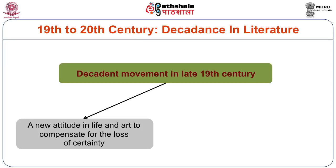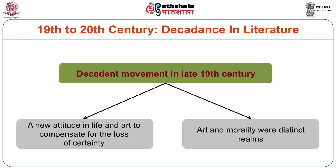Decadence is a new attitude in life and art to compensate for the loss of certainty. The loss of certainty is something that happened with Charles Darwin, and with the book that shook Europe — Thus Spake Zarathustra by Friedrich Nietzsche — who came up with the pronouncement that God is dead. The other thing to keep in mind when we talk about the decadence movement has to do with questions of art and morality. In the decadence movement of the late 19th century, art and morality were very distinct, separate realms.